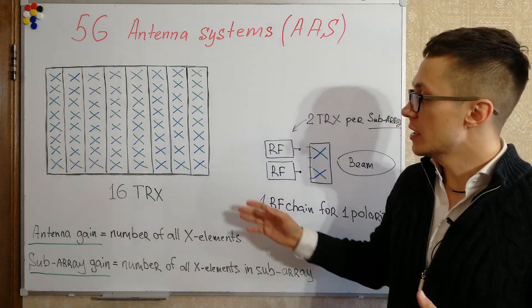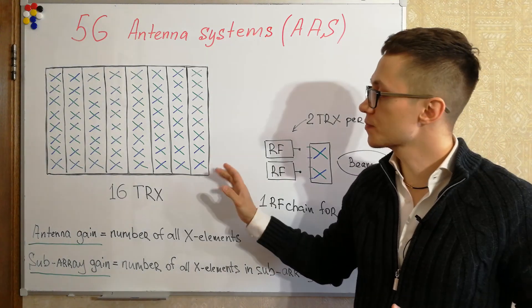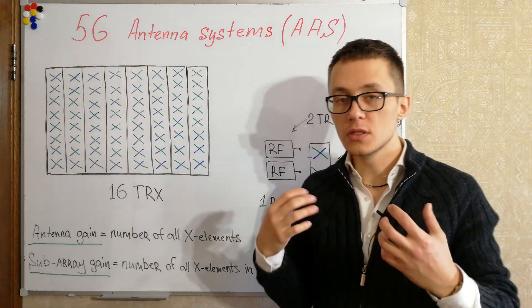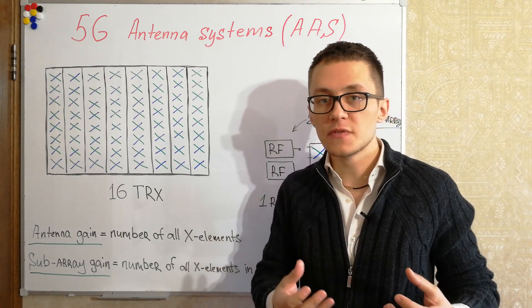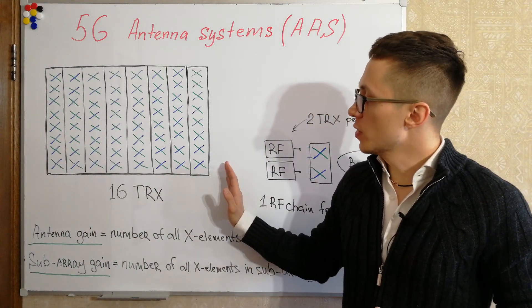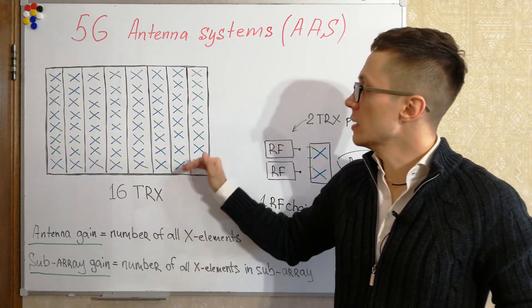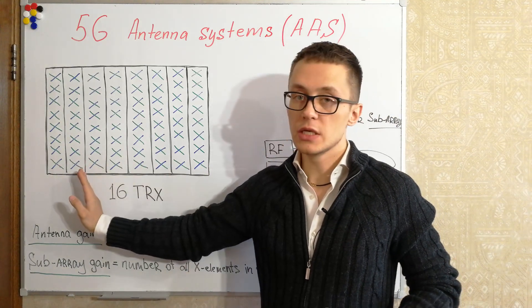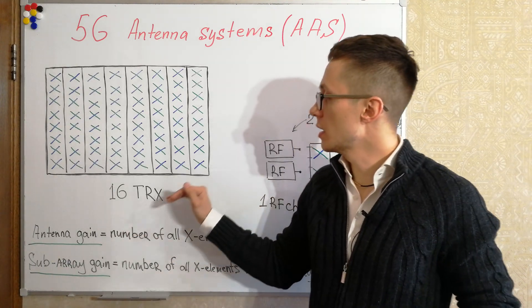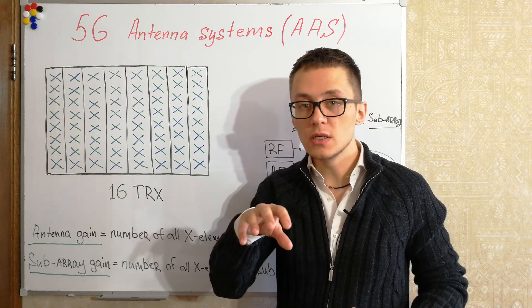Let's look at my example. Here we can see 64 cross-polarization elements. All of these elements are divided into sub-arrays. Sub-arrays give the ability for the whole system to steer and manage beams. We can divide the whole antenna system into sub-arrays in the horizontal direction or in the vertical direction. In horizontal it's good for forming and managing beams horizontally, and in vertical it gives the possibility to manipulate beams vertically.